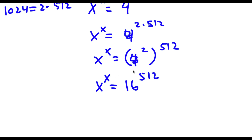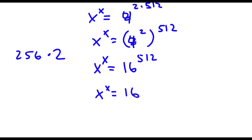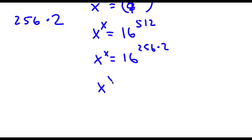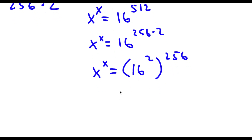And as you guys may notice, this is a pattern. We're simply replacing the exponent with the exponent divided by 2, times 2. So 512, for example — 512 divided by 2 equals 256, and 512 is the same thing as 256 times 2. So we have 16 to the power of 256 times 2, and we put this in the form 16 squared to the power of 256. 16 squared is 16 times 16, which is 256. So now I have 256 to the power of 256.